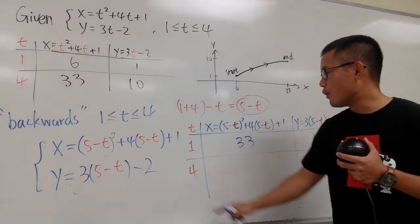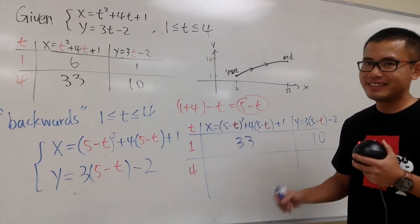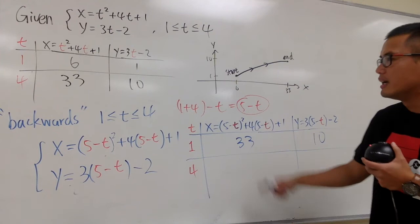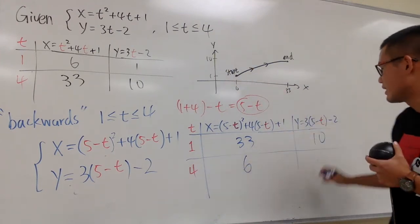And likewise, if you plug in 4, 5 minus 4 is what? It's 1, so you are talking about 1 squared. And then plus 4 times 1, and so on. And then just work this out, you get 6. I'm just looking at that number and 1.